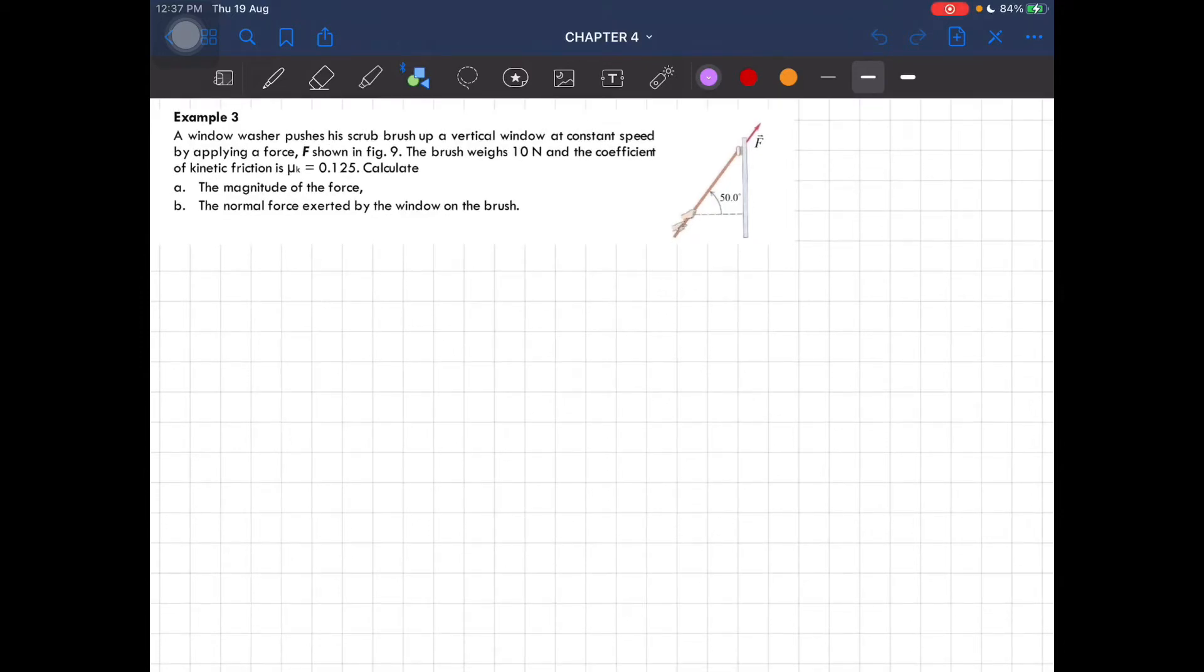Alright, Example 3. A window washer pushes his scrub brush up a vertical window at constant speed by applying a force F. The brush weighs 10 newtons and the coefficient of kinetic friction is 0.125. Calculate the magnitude of the force and the normal force exerted by the window on the brush.